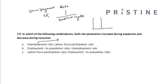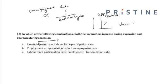When the GDP is at its potential value, economic expansion causes the GDP to shift to the right, which causes the unemployment rate to fall as more and more people gain employment.